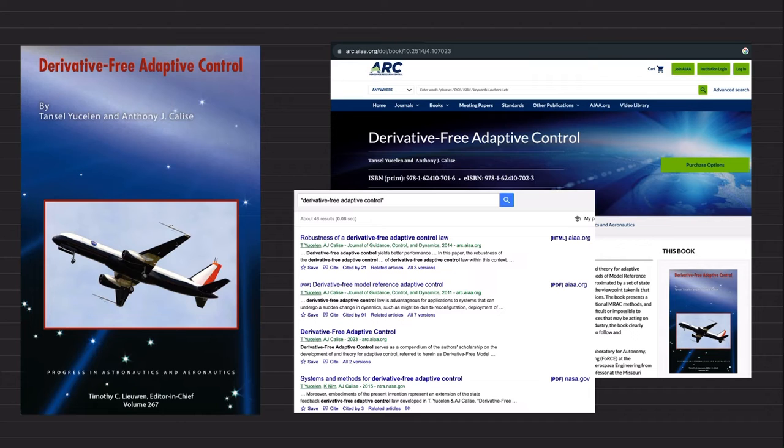The first masterclass lecture is about my recent book called Derivative-Free Adaptive Control. It is co-authored by myself and my PhD advisor, Antoni Callis. And this book, the material is related to my PhD work. So I would like to also mention that this Derivative-Free Adaptive Control was flight tested by NASA on the Air Star vehicle, which you can see this fixed-wing aircraft on the book cover. This is the Air Star of NASA.